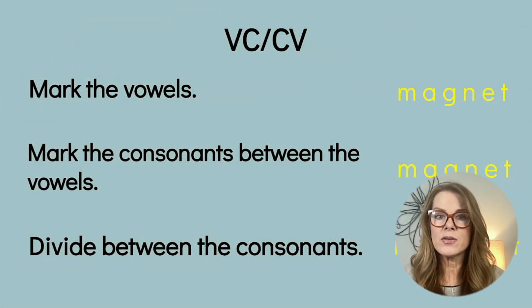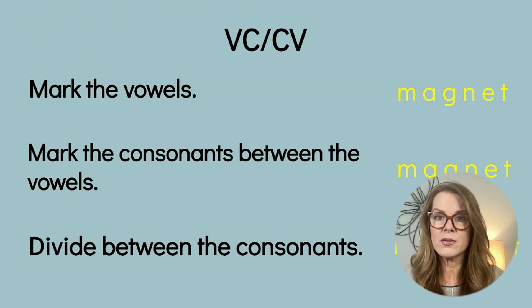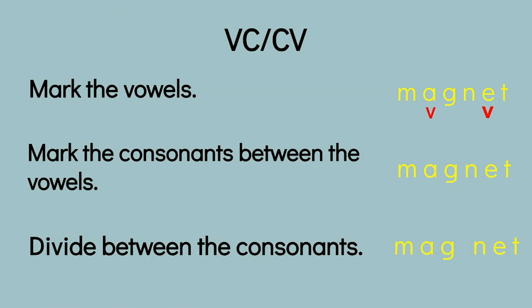VCCV pattern is the first and simplest syllable pattern that we teach children. A VCCV pattern creates two closed syllables. Closed syllables have a short vowel sound. Dividing words with VCCV patterns just takes three steps: mark the vowels, mark the consonants in between the vowels — note that we don't mark all of the consonants, just the ones in between the vowels — then divide between the consonants.